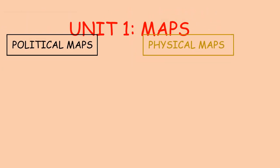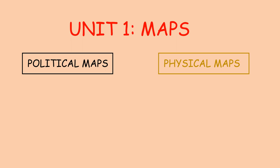Hello class, today we are going to speak about social science. In unit number one, we spoke about maps. There are two types of maps: political maps and physical maps.